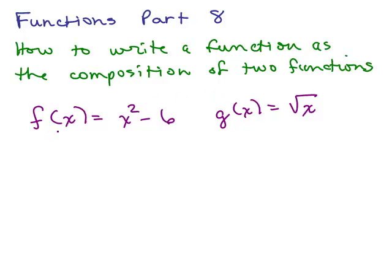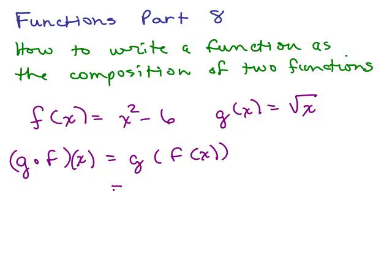For example, let's say we had f(x) = x² - 6 and g(x) = √x. If we wanted to do g(f(x)), that means g of f of x. Now f(x) is x² - 6, so I plug that in for f(x). Then I go to the g function, which is the square root, and I replace x with x² - 6. So I have √(x² - 6).